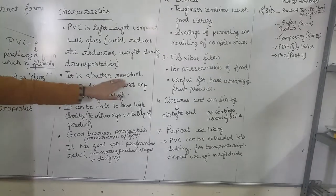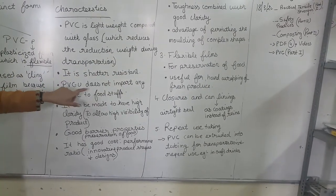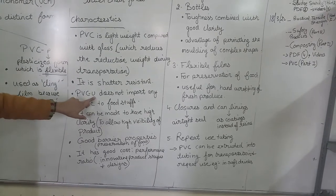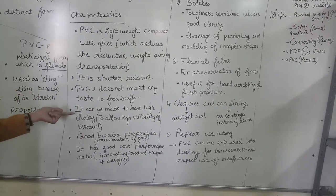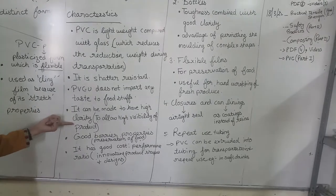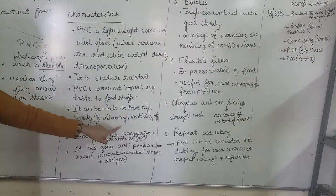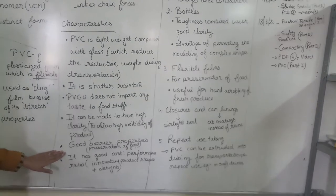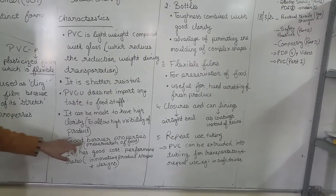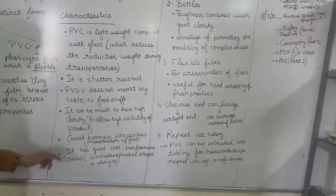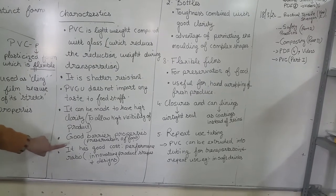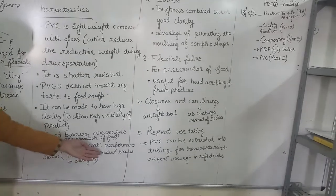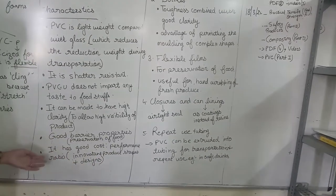PVC is also shatter resistant. PVC-U, the unplasticized form, does not impart any taste to the foodstuff. It can be made to have high clarity to allow high visibility of the product. It has good barrier properties useful for preservation of food, and high cost-performance — meaning innovative product shapes and designs can be formed with PVC.